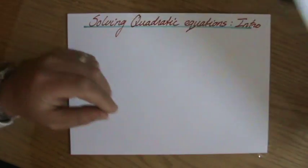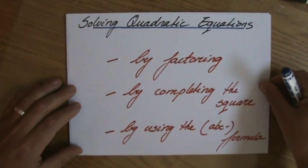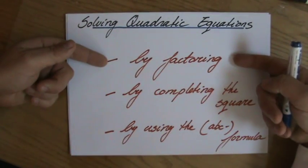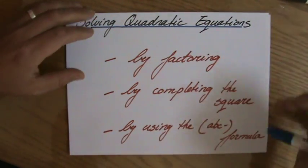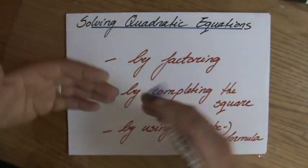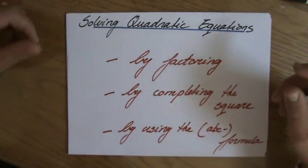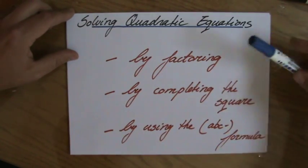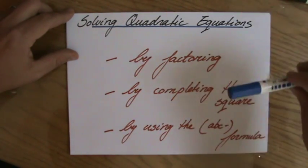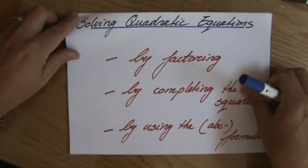And we have three methods to solve quadratic equations. That is by factoring, by completing the square, and by using the formula. But I call it the ABC formula. And why I call it the ABC formula will make sense when I will discuss the formula. But you have three strategies: factoring, completing the square, and the ABC formula.